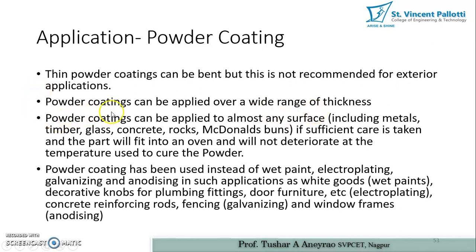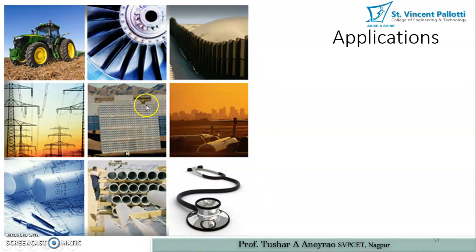Powder coating can be applied over a wide range of thicknesses and to almost any surface, including metal, timber, glass, concrete, rock, and various other materials. If sufficient care is taken — the part will fit into an oven and will not deteriorate at the curing temperature — powder coating can be used instead of wet paint, electroplating, galvanizing, and anodizing. Applications include white goods, decorative knobs for plumbing fittings, door furniture, concrete reinforcing rods, fencing, and window frames.